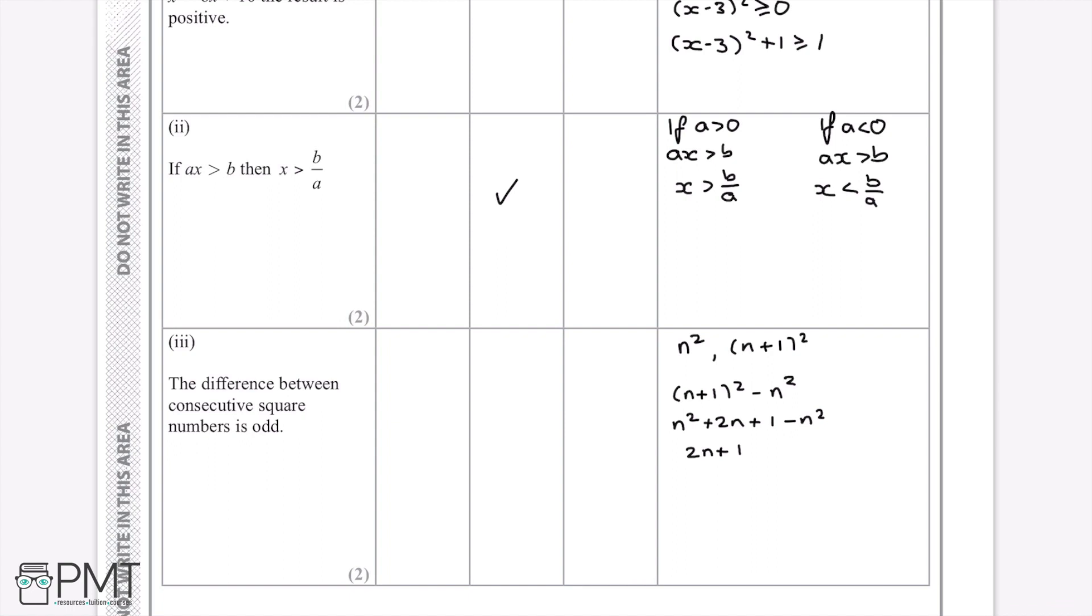And so since 2n plus 1 is the expression for an odd number, that means that the difference between consecutive square numbers must always be odd, because we always end up with something that can be written as 2n plus 1. And so the answer would be always true, as this is the formula for odd numbers.